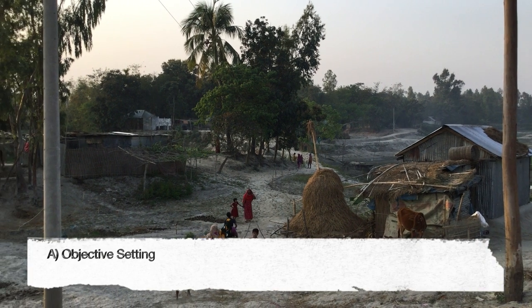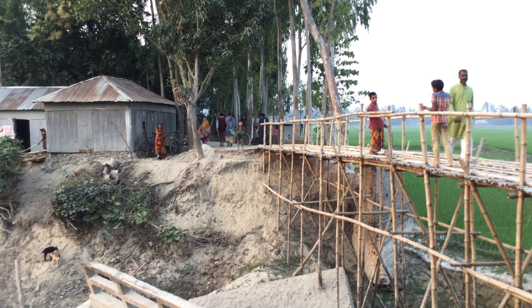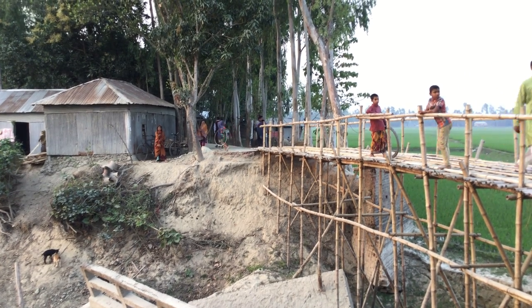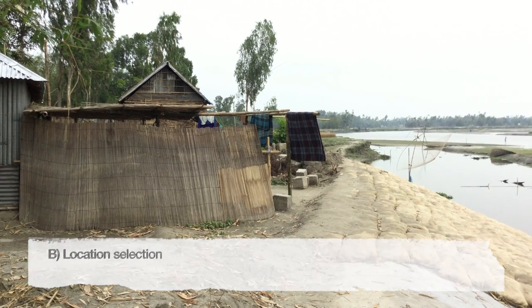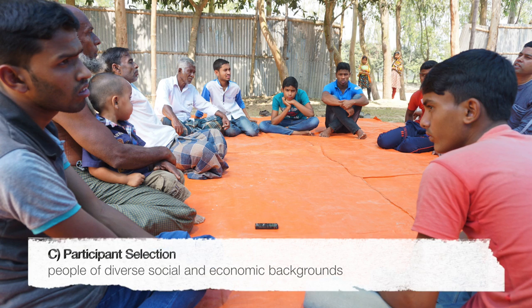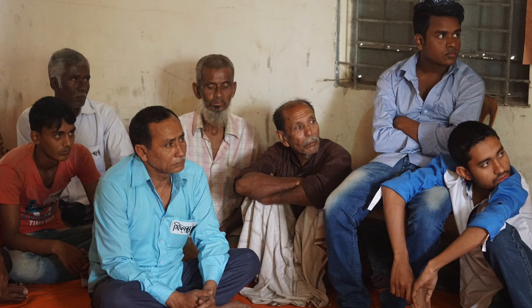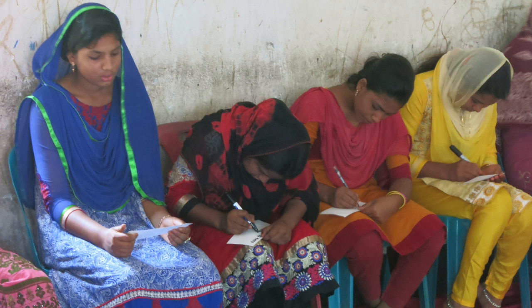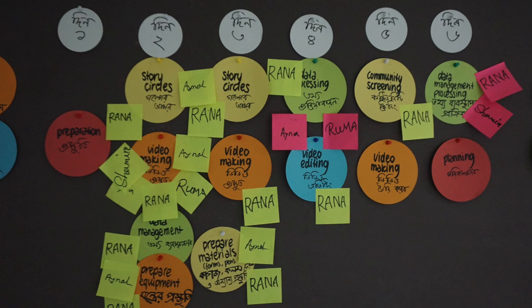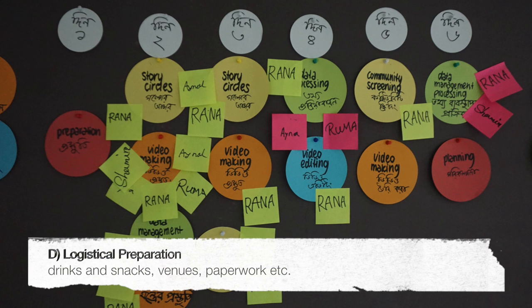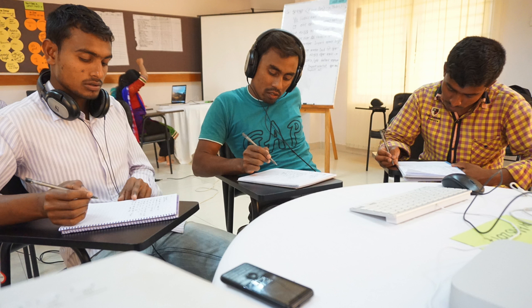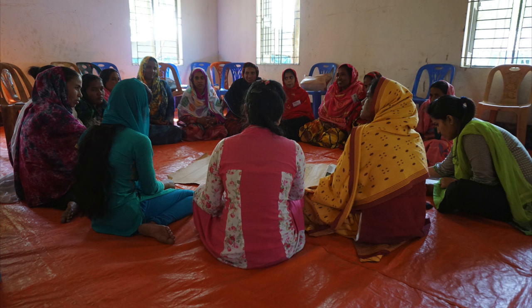Phase 1: Project Preparation. The trained team meets up to set clear objectives for their evaluation and to agree on the best locations to carry it out. Four groups of 8 to 15 participants are invited to join as representatives of their wider community: one group of men, one group of women, one group of girls and one group of boys. All logistical arrangements are made, including drinks and snacks, as well as suitable venues for desk-based work, group discussions and a screening event.